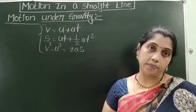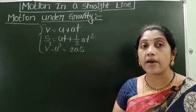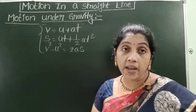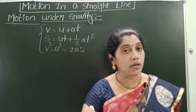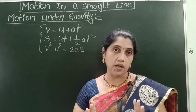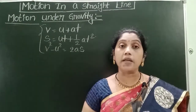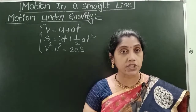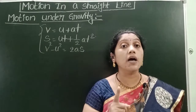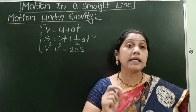Equations of motion: V = U + AT; S = UT + ½AT²; V² − U² = 2AS. We can use equations of motion when an object is moving with constant acceleration. When a body is in free fall or projected in upward direction, acceleration due to gravity is constant, so we can use the equations of motion in case of gravity also.